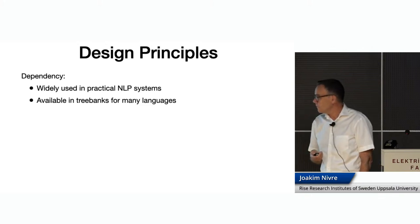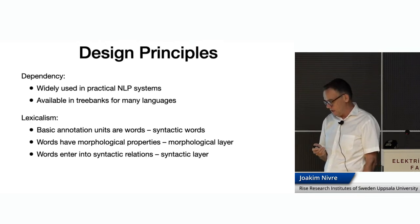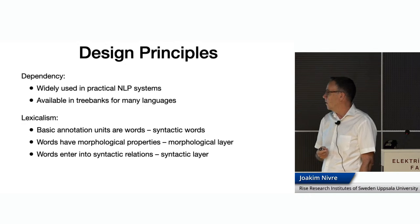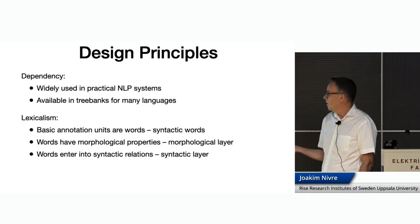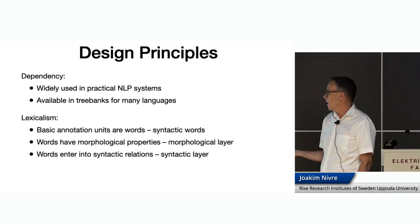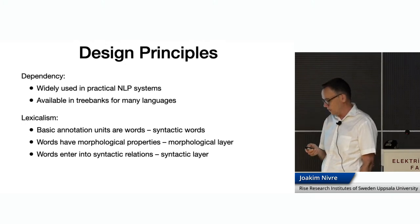The second basic design principle is what we sometimes refer to as a version of lexicalism. In this context, what it primarily means is that we take the basic annotation units to be words, not morphemes, because we think that words are more universally generalizable, although they are still quite challenging. The basic idea is that words have morphological properties — some languages have more morphology, some have less — and words enter into syntactic relations with other words, which we capture in a syntactic layer.